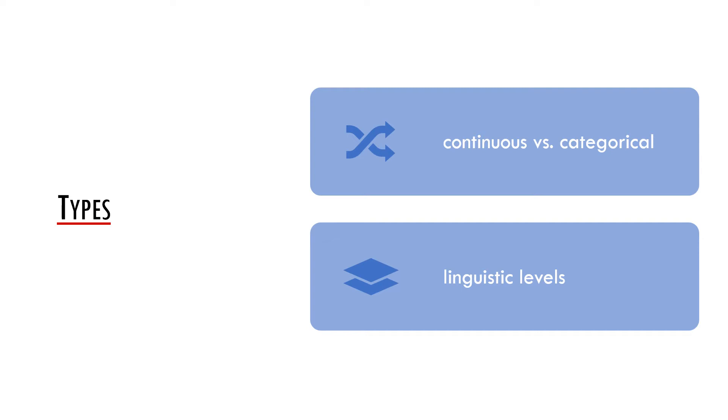On the other hand, continuous variables are such variables whose values lie on a certain continuum. These variables are phonetic or phonological. A good example from Czech might be the vowel quantity. We can precisely measure how long a certain vowel is.